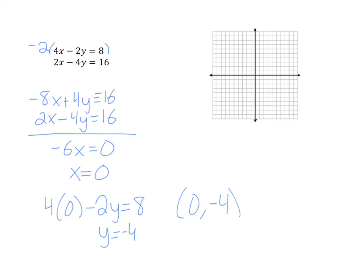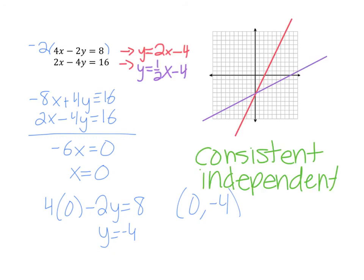So my solution is 0, negative 4. Because this has one solution, I know that my graph will cross at one point, and I will have a consistent and independent system of equations. And our solution is this point right here, 0, negative 4, where the lines cross.